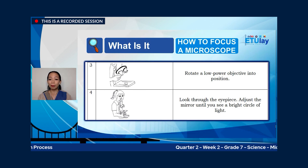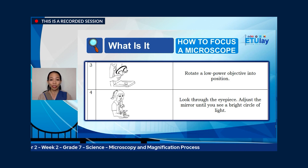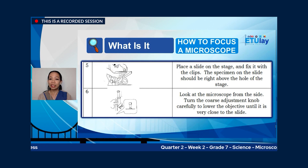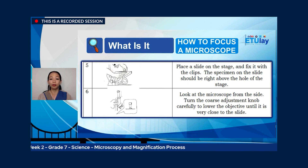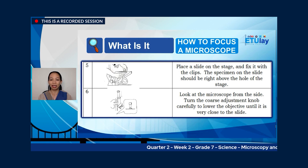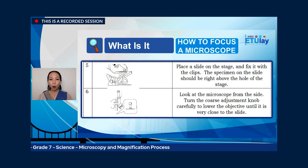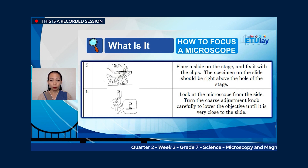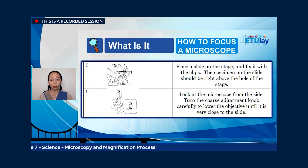Step four: look through the eyepiece or ocular lens and adjust the mirror until you see a bright circle of light. You don't want to scan or focus a specimen with a dark microscope. Step five: place a slide on the stage and fix it with the clips. The specimen on the slide should be right above the hole of the stage, which allows light to pass through so you can see the specimen. Step six: look at the microscope from the side. Turn the coarse adjustment knob carefully to lower the objective until it is very close to the slide — do not let the objective touch the slide or you might break it.